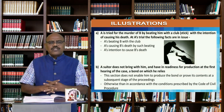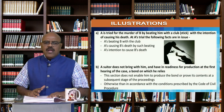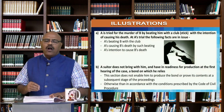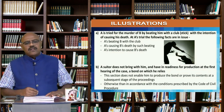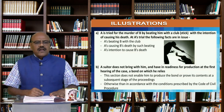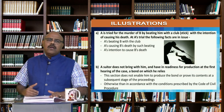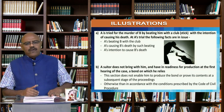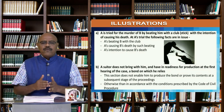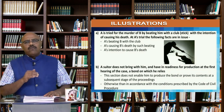The second illustration is of a civil proceeding. A suitor does not bring with him, and does not have in readiness for production at the first hearing of the case, a bond on which he relies. This section does not enable him to produce the bond or prove its contents at a subsequent stage of the proceeding, otherwise than in accordance with the conditions prescribed by the Code of Civil Procedure. That means if the Civil Procedure Code stops him from producing that document at a later stage, then the Indian Evidence Act will also not allow it.